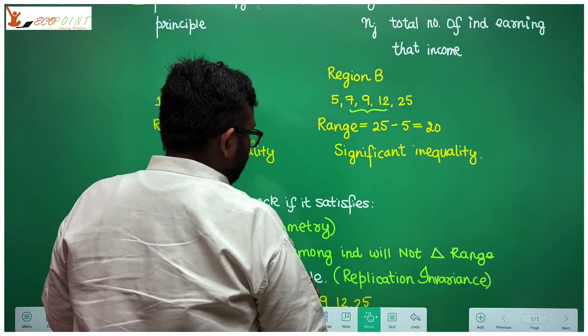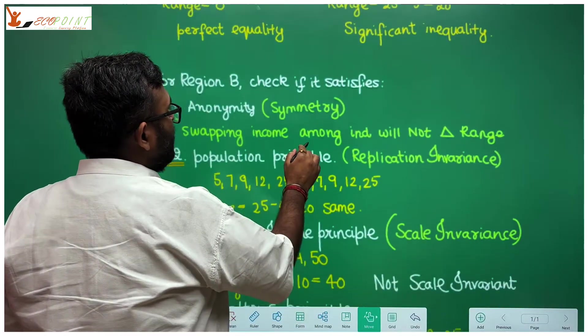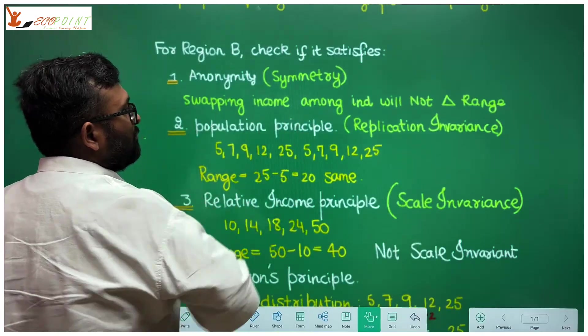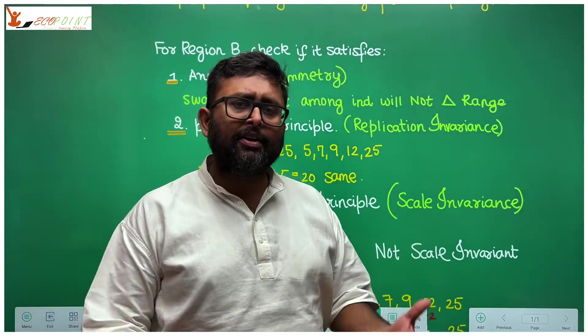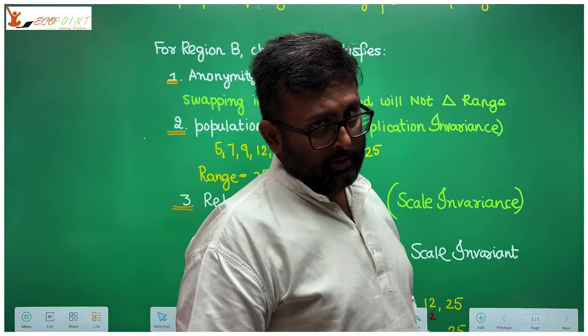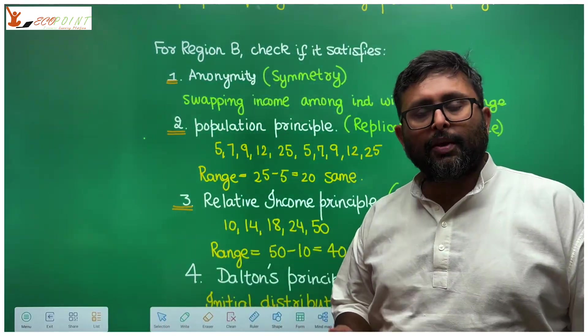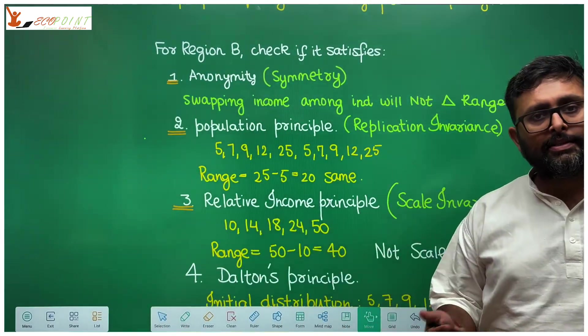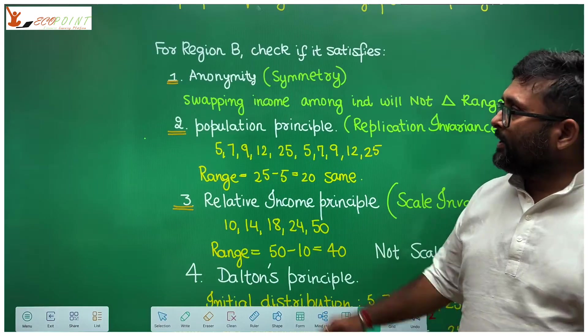Now, the second thing is that we have to check whether it satisfies the other criteria of measure of inequality. So what are the different criteria of measure of inequality? I told you earlier: anonymity principle, population principle, relative income principle and Dalton's principle.